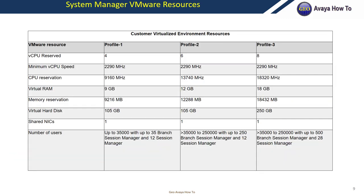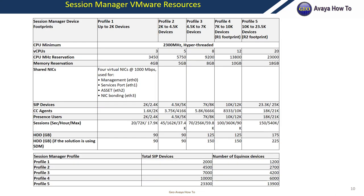System Manager VMware resources — when you deploy the System Manager OVA, you have three profiles to choose from, each using a different number of resources. Evaluate your infrastructure to see which deployment will work best; we decided to deploy Profile 1. For Session Manager, you have five profiles to choose from. We chose Profile 1 because we are not utilizing that many SIP resources. Deleting an ASM instance and redeploying is fairly simple if you need to change the profile.